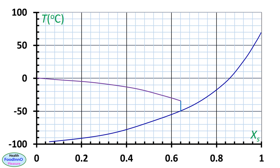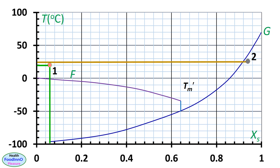Now we need to draw the freeze-drying path in the state diagram. F is the freezing curve, G is the glass transition line, and Tm' is the maximum freeze concentration condition. First we need to locate the initial temperature 20 degrees C and moisture content 95%, marked as point A — it is in the rubbery state. Second, we need to locate the freeze-drying temperature at minus 60 degrees C, and then locate the final moisture content 5% at 25 degrees C, marked as point 0.2, which is the glassy state.